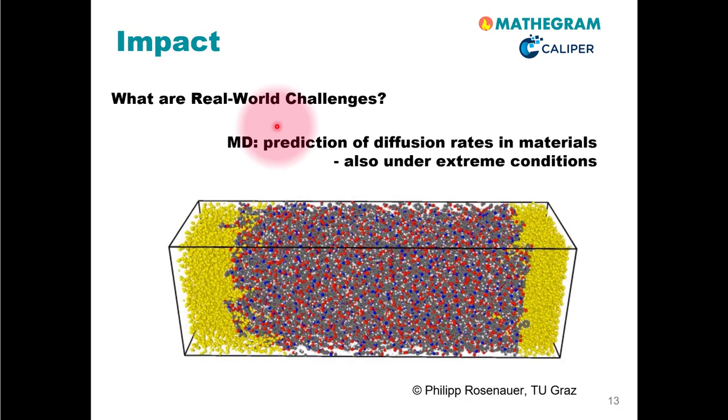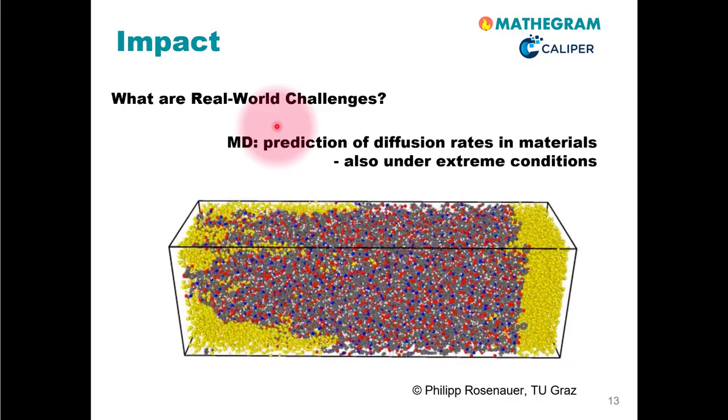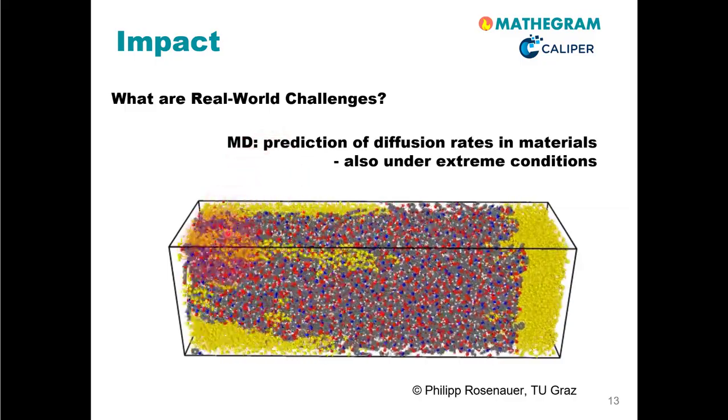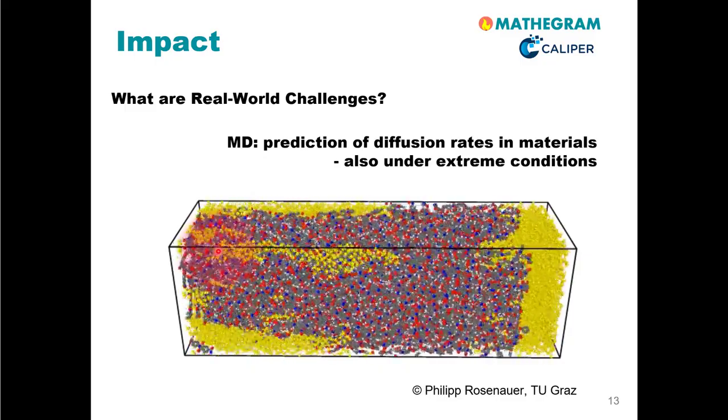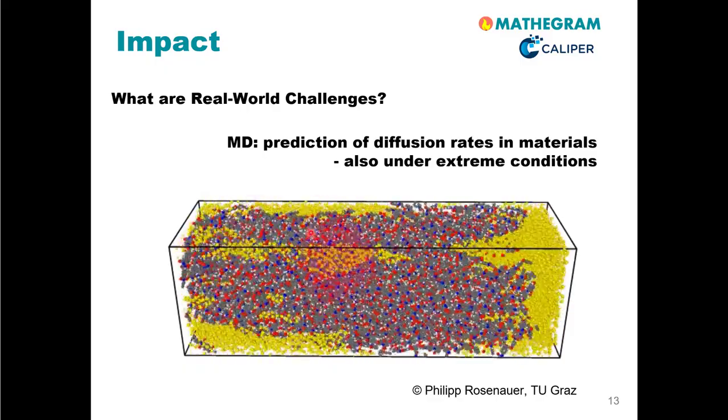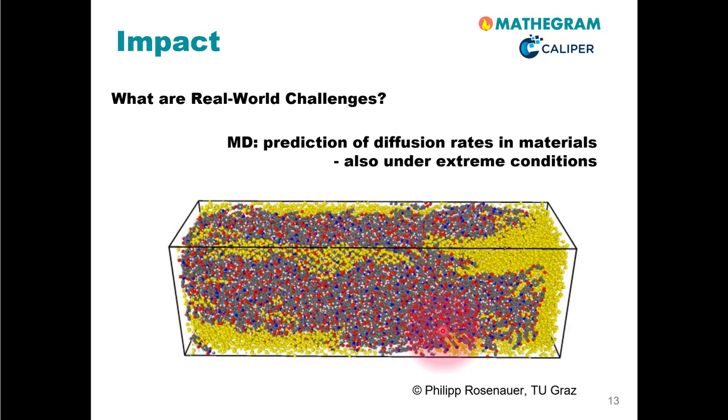You see here a simulation of Philip Rosenauer from TU Graz that is interested in the diffusion of water molecules in polymeric materials. Water is here shown as the yellow small molecules. And these molecules then diffuse into pores of polymers. The polymers here, this big structure here, this red, blue, grey, white colored atoms and molecules. And these are very important simulations that help people in industry designing better molecules for polymers.